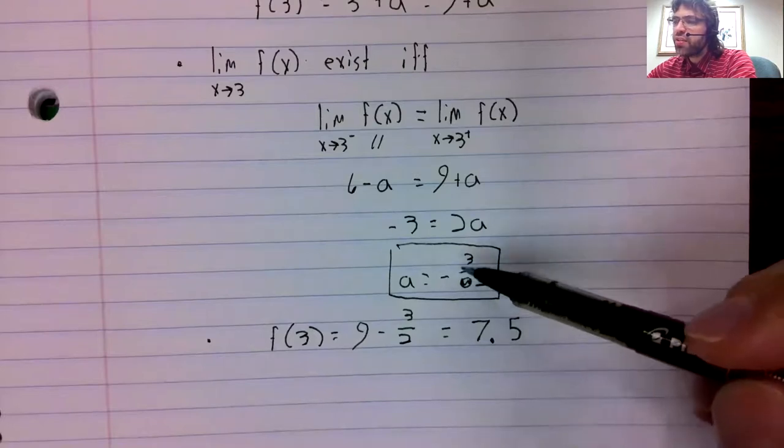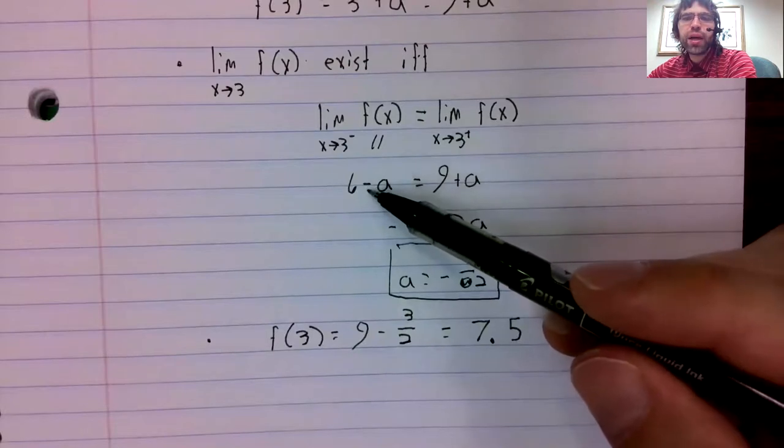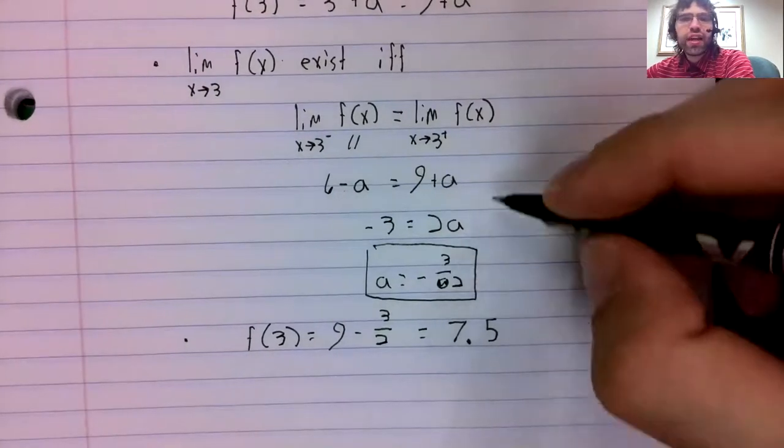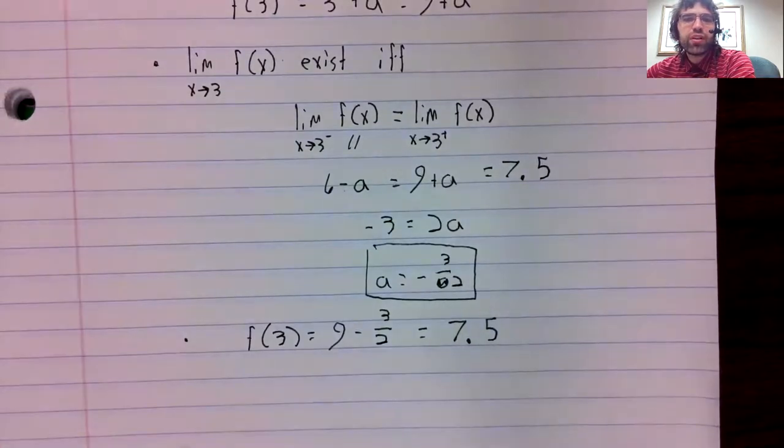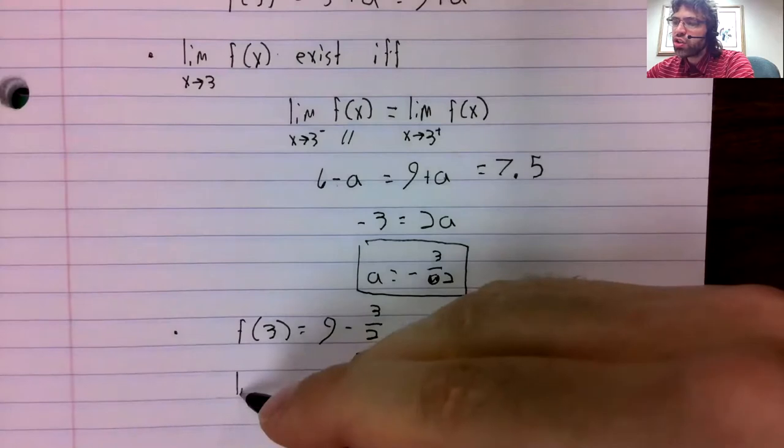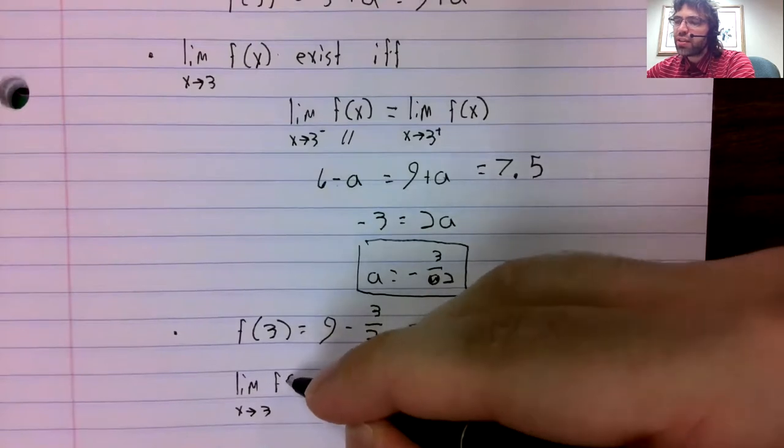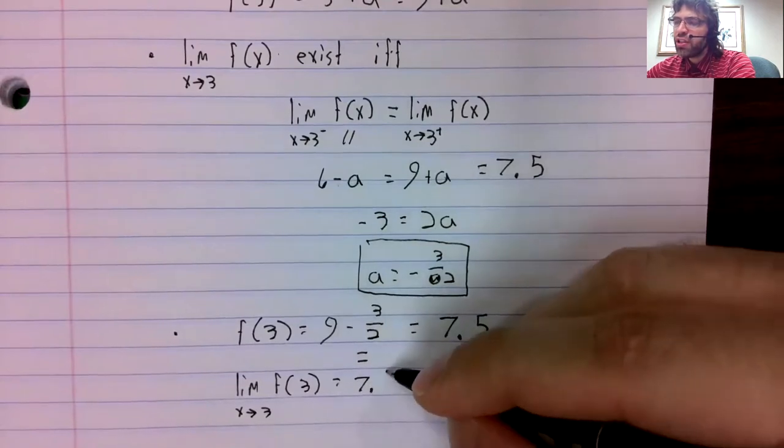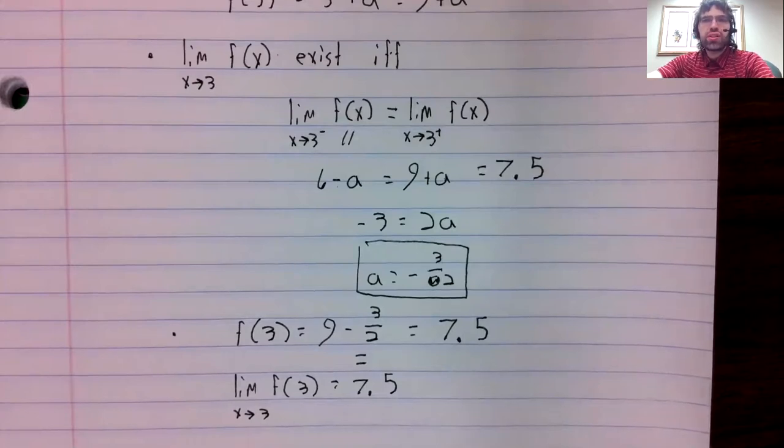And what is this common limit? So it's either six minus A or nine plus A. For this value of A, that's the same thing, 7.5. So our last condition is satisfied. F of three equals the limit as x approaches three.